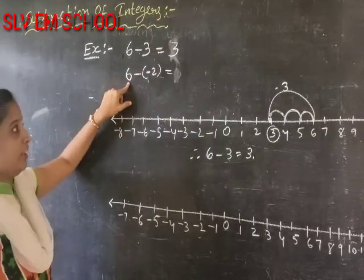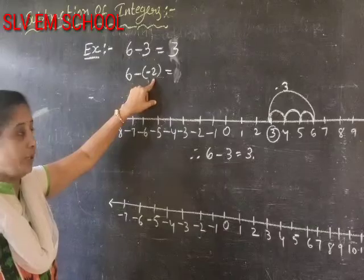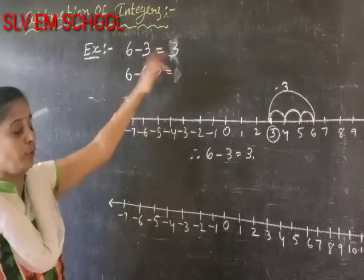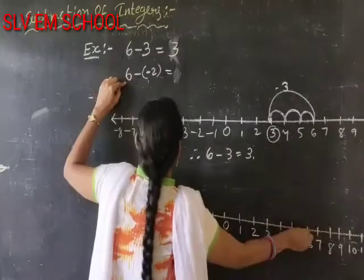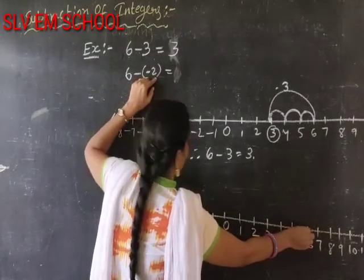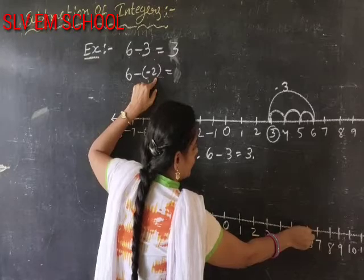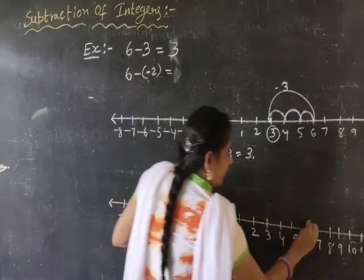When negative integer is subtracted, we go to the right side on the number line. So start from 6. Here minus 2, negative integer, so you have to go on the right side.